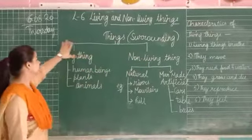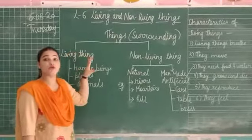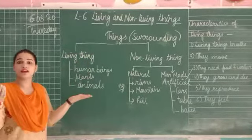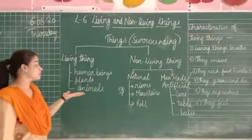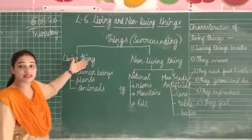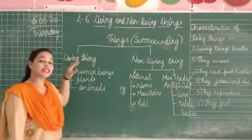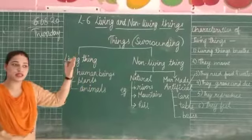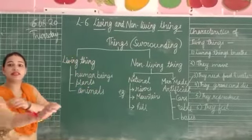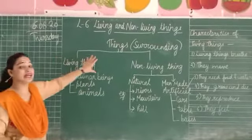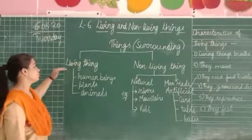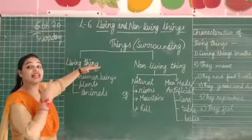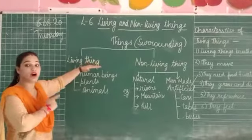Living things are those which have life, which breathe, which grow. These are called living things and they are made by nature. Things which have life are living.